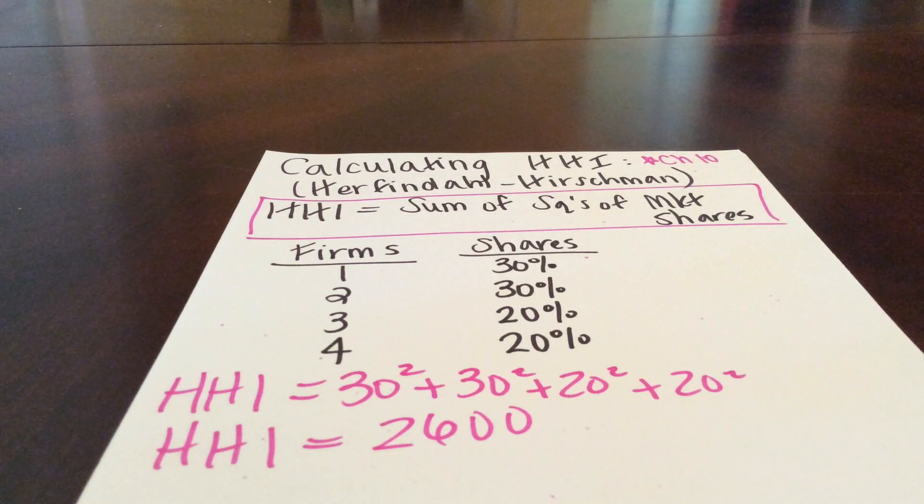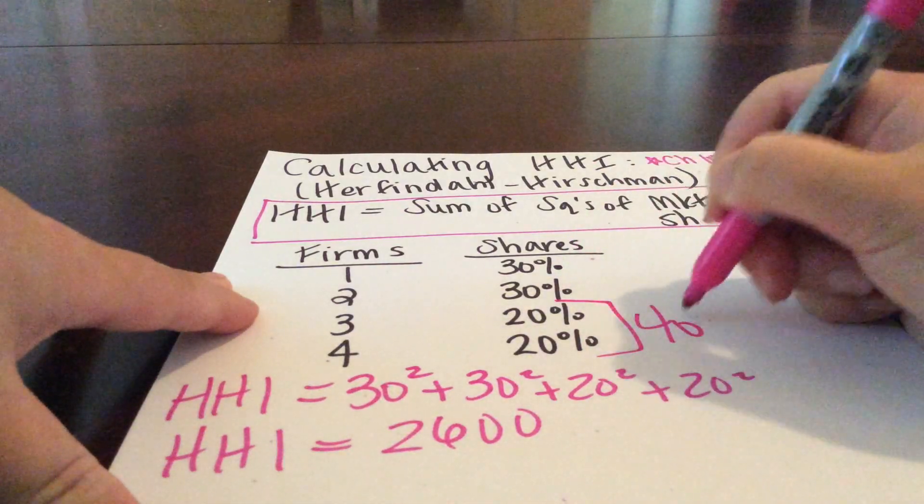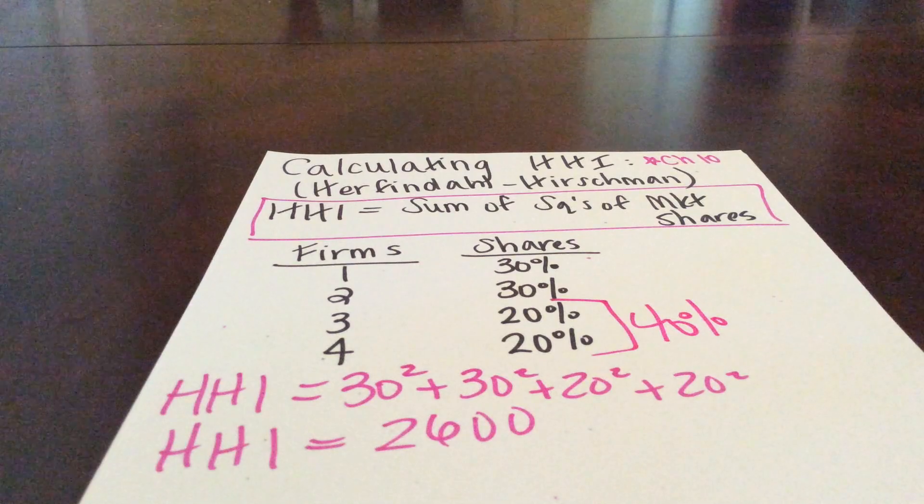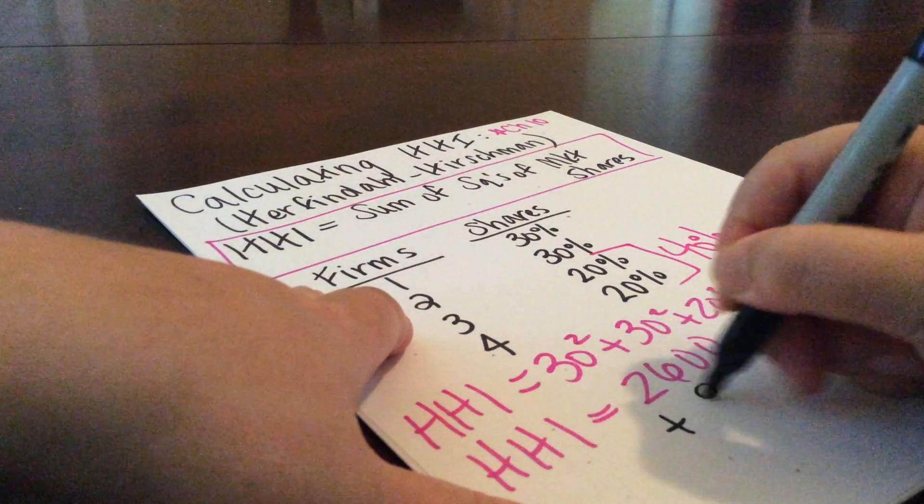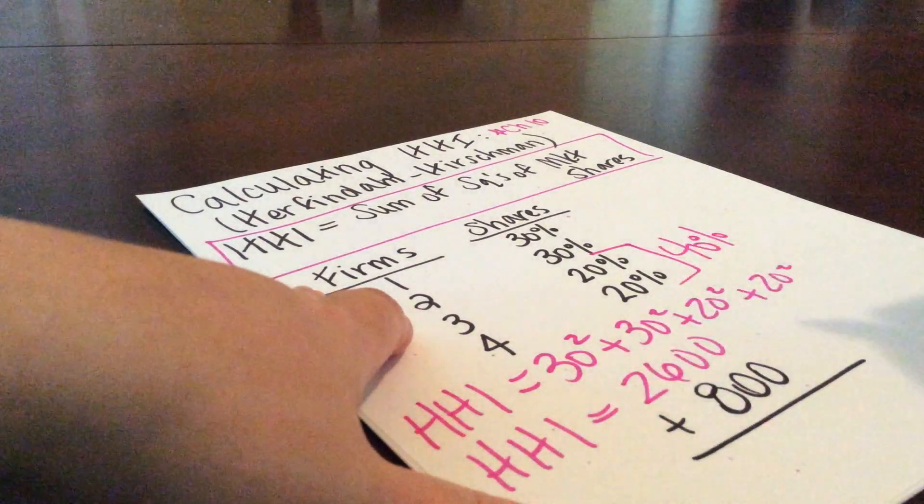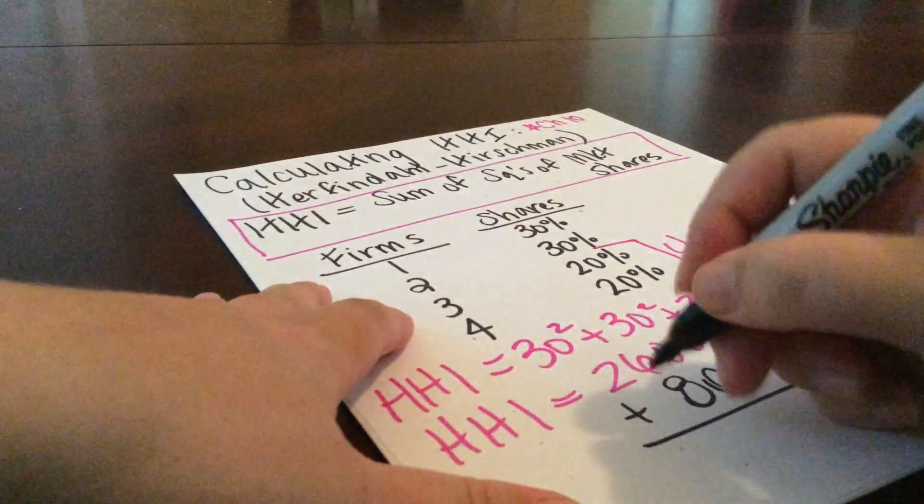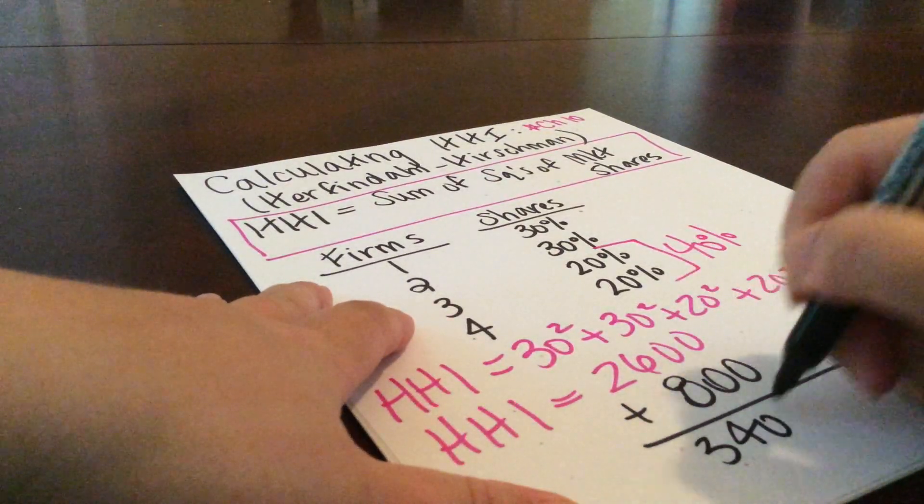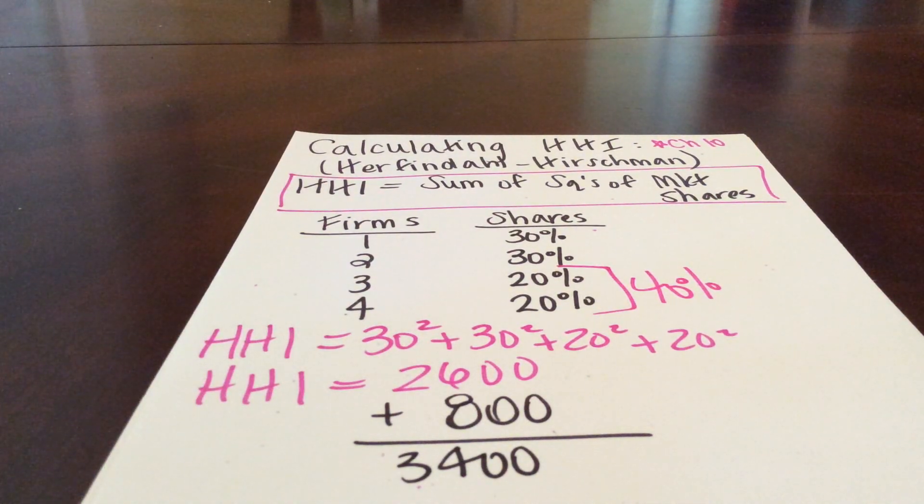For example, look what happens if firms three and four were to merge, and they suddenly had 40% of the market shares. Well, if you calculate it out, our HHI would increase by another 800. And so again, we would see the competitiveness of this market would decrease further as we move from four firms to three, and as the one firm was then much larger than the others.